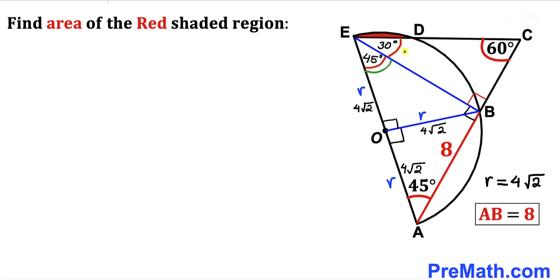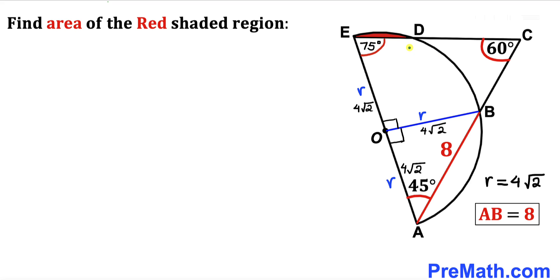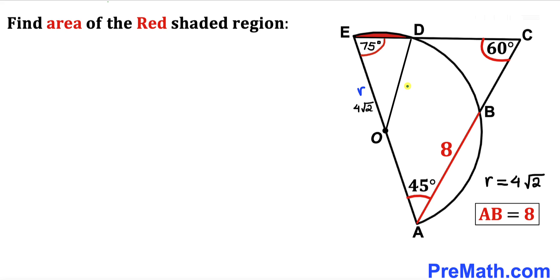We can observe that angle ABE is 45 degrees and angle BEC is 30 degrees, so the whole angle OED is 45 plus 30 equals 75 degrees. In the next step, I've connected center O with point D, and OD is a radius of the semicircle, so OD equals lowercase r.